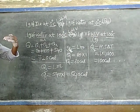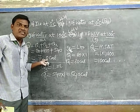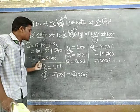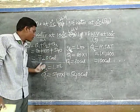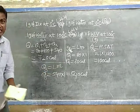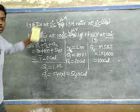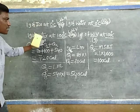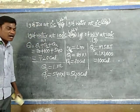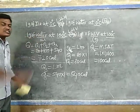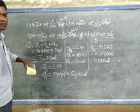If certain examinations ask for the value in joules: 720 into 4.2 joules. We can automatically find the value in SI units or joules. This is the method to solve this type of numerical based on the latent heat concept.